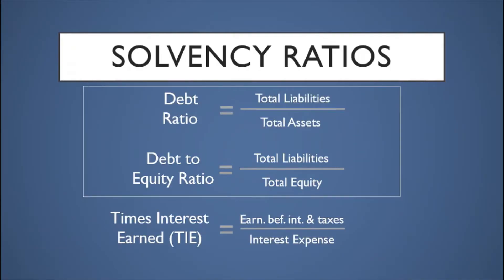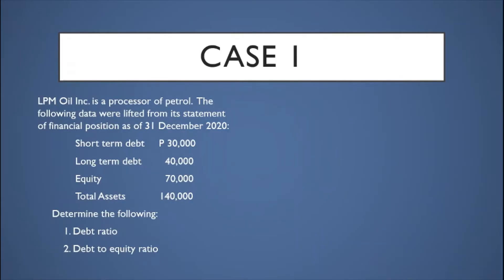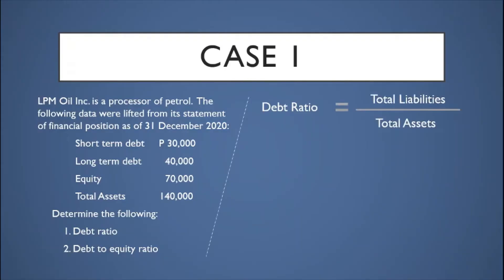Considering this, lower debt ratios and debt-to-equity ratios mean better solvency for the company. To demonstrate how these ratios are calculated, consider the following case: OPM Oil Incorporated is a processor of petrol. From its statement of financial position as of December 31, 2020 — short-term debt: ₱30,000; long-term debt: ₱40,000; equity: ₱70,000; total assets: ₱140,000. We are asked to determine the debt ratio and the debt-to-equity ratio.